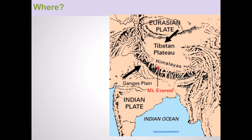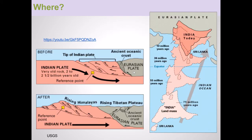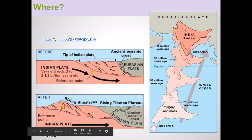A great example is the Tibetan Plateau and the Himalayan Mountains, where the Indian Plate has collided with the Eurasian Plate, creating this very wide area of deformation and some of the tallest mountains in the world. Here's a side view of that collision, showing how the Indian Plate rams into the Eurasian Plate and stacks pieces of itself on top of themselves.